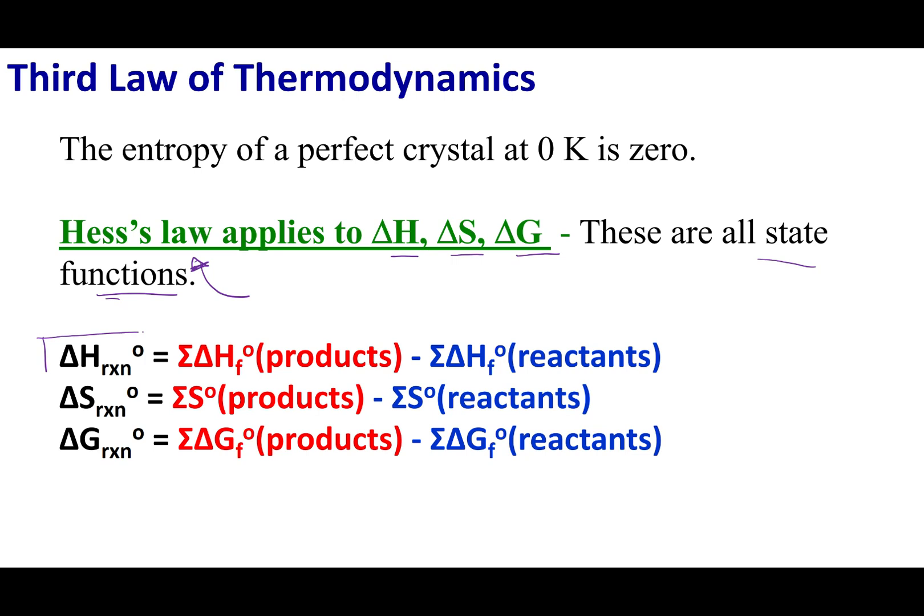So I told you guys about this equation right here. We can calculate the delta H for reaction if I take the delta H of formation of my products and subtract the delta H of formation of my reactants. I can do the same for delta G. If I look up the delta G of formation of my products and subtract the delta G of formation of reactants, what I will get is the delta G of my reaction.